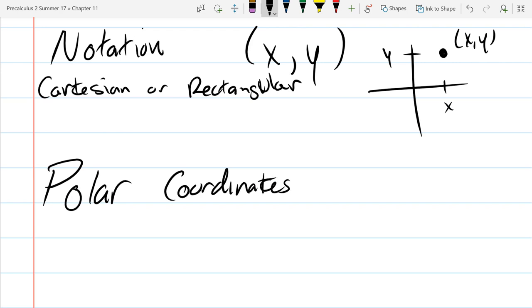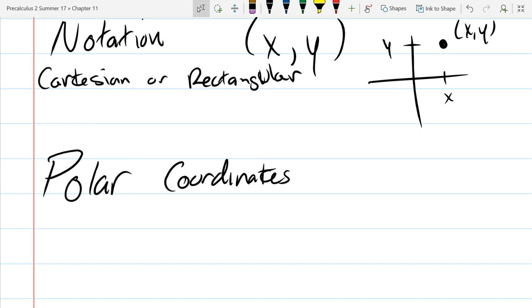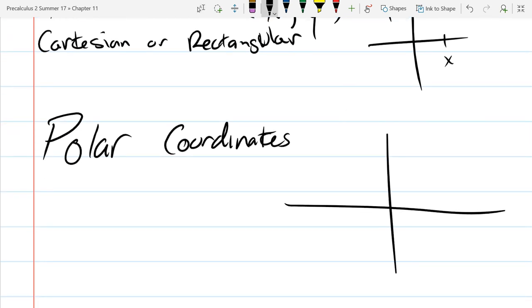We're still going to use rectangular coordinates, but generally it's going to be to convert from rectangular to polar or convert from polar to rectangular. So rectangular coordinates are still important, but we're not going to go over much review on rectangular coordinates.